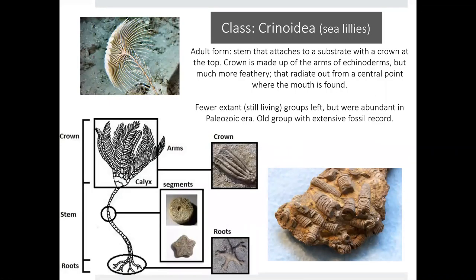Our last class is Crinoidea, the sea lilies. This group has very few members left in the wild — they are an extant species but were much more abundant during the Paleozoic era, and you can find many in the fossil record. As adults, sea lilies are attached to substrates with a crown at the top, kind of resembling a plant, but they are animals. The crown is made up of feather-like arms of the echinoderm, which they use to help capture prey. They also have a mouth that radiates from a central point where they feed.